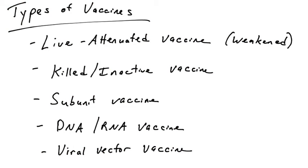Live attenuated vaccines are the gold standard for vaccines because they really produce a strong immune response to the real pathogen, and that immune response tends to give lifelong immunity. If we're not getting lifelong immunity, we might need booster shots or repeated vaccinations — and you'll see that in other types of vaccines, where immunity may not be lifelong. But live attenuated vaccines are definitely the gold standard in terms of mimicking infection and getting the immune system to mount a robust immune response to the pathogen.